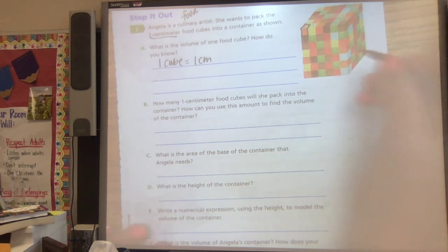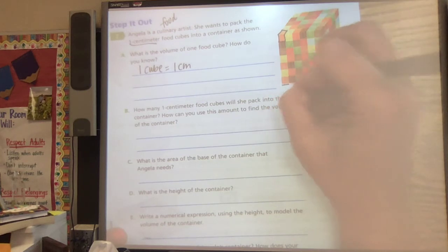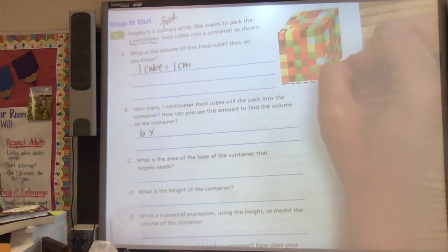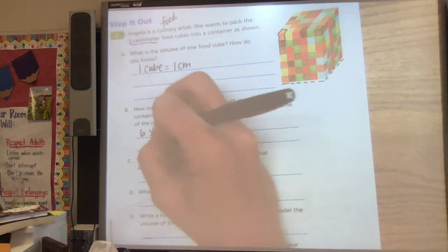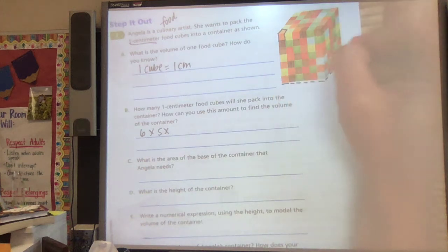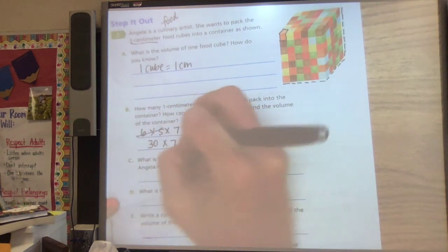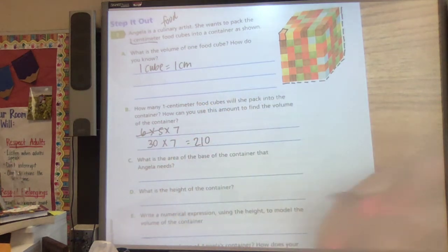So let's look here, we've got one, two, three, four, five, six for my length, one, two, three, four, five for my width, and one, two, three, four, five, six, seven for my height. So I know 6 times 5 is 30, and 30 times 7 is 210.